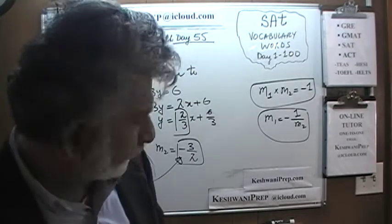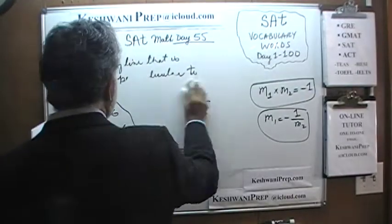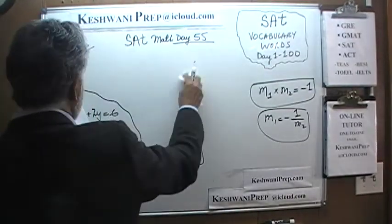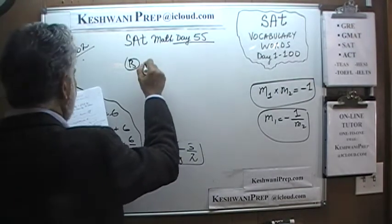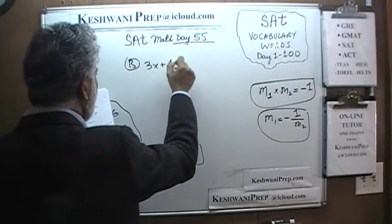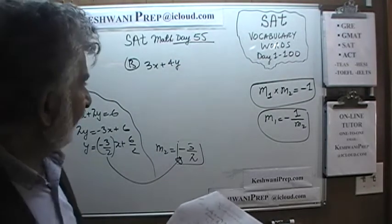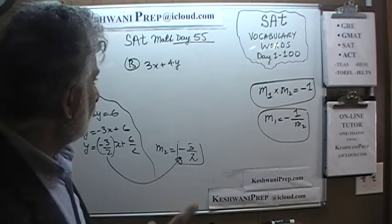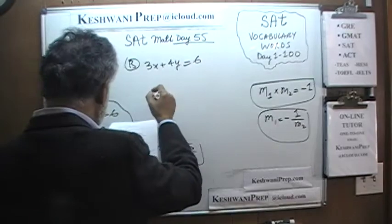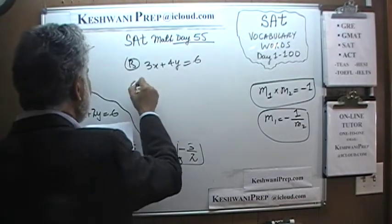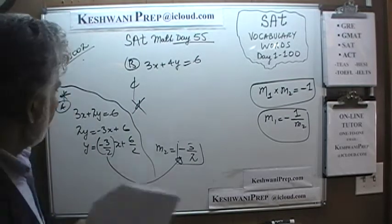None of the other answer choices are going to work. For example, answer choice B says 3x plus 4y — we can stop right there, because the original had coefficients negative 2 and 3, so the perpendicular must have coefficients 3 and 2, not 3 and 4. It doesn't matter what appears elsewhere — it won't give you the same slope. Same thing with C and D — they're not going to work. The answer is A.